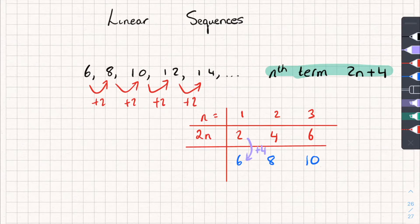Well, I can add 4. How can I go from 4 to 8? Well, I could add 4. How can I go from 6 to 10? I could add 4. So all I need to do to adjust my nth term is keep it as 2n, but then from over here, I just need to add 4.